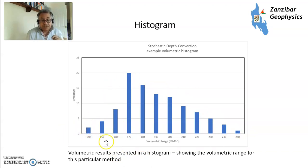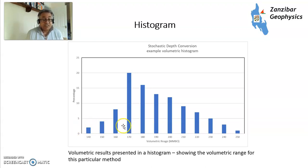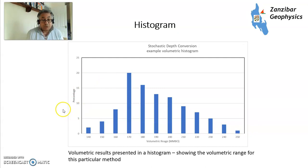For example, if your minimum economic volume is 160 million barrels for a particular type of development, you might have a bit of uncertainty around the low cases. You might want to drill an appraisal well to eliminate those low cases, or if you are in that low case scenario you can sell the asset to someone else who may have different development thresholds. So the histogram of volumetric outputs is a very useful byproduct.